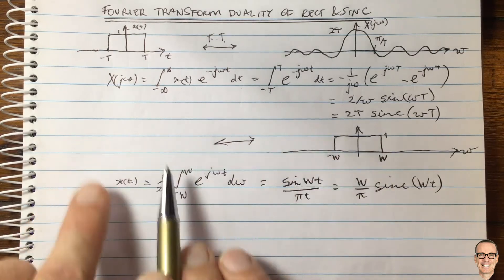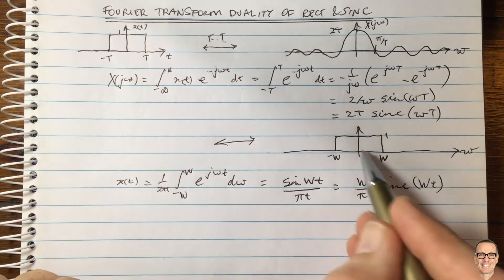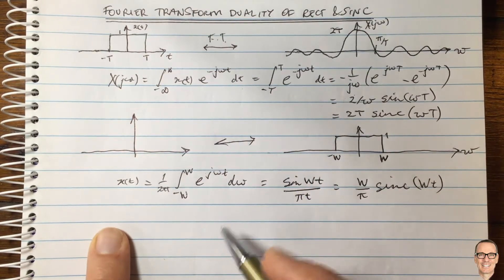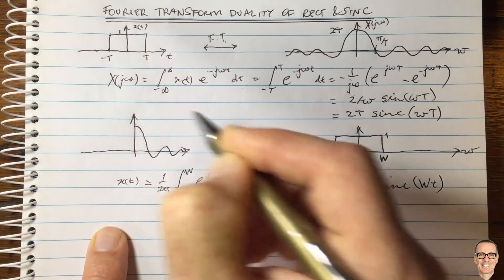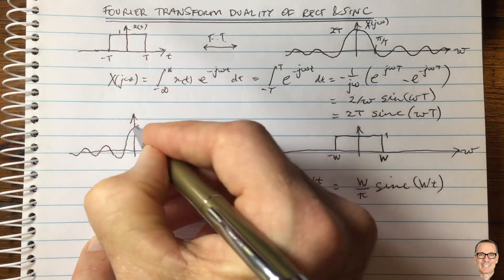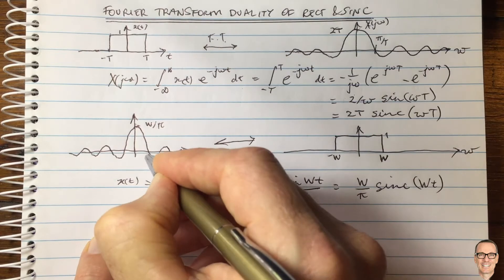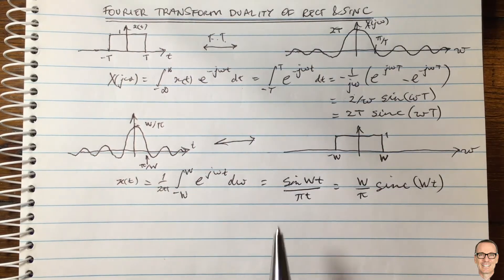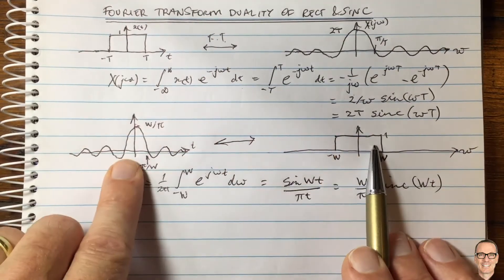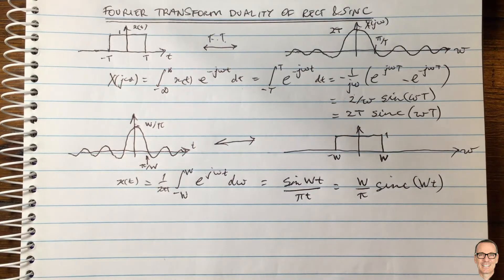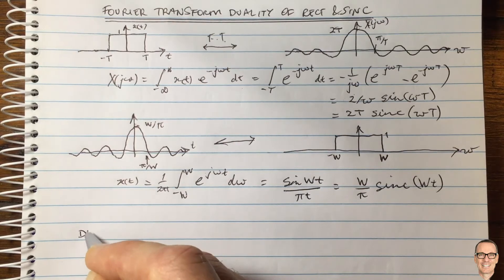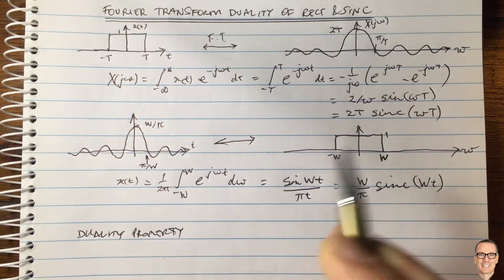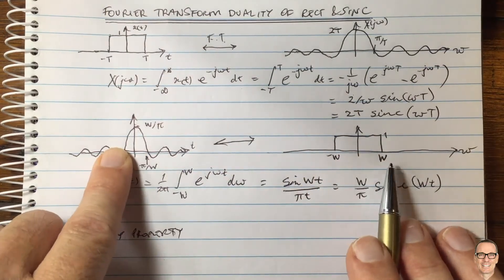So going in reverse, the inverse Fourier transform of a square function is also a sinc function. It is a square in one direction and a sinc in the other. The height of the time-domain sinc is W divided by pi, and the first crossing point is pi divided by W — in the time domain. This is exactly what the duality formula predicts, which we can also obtain directly from the first result.